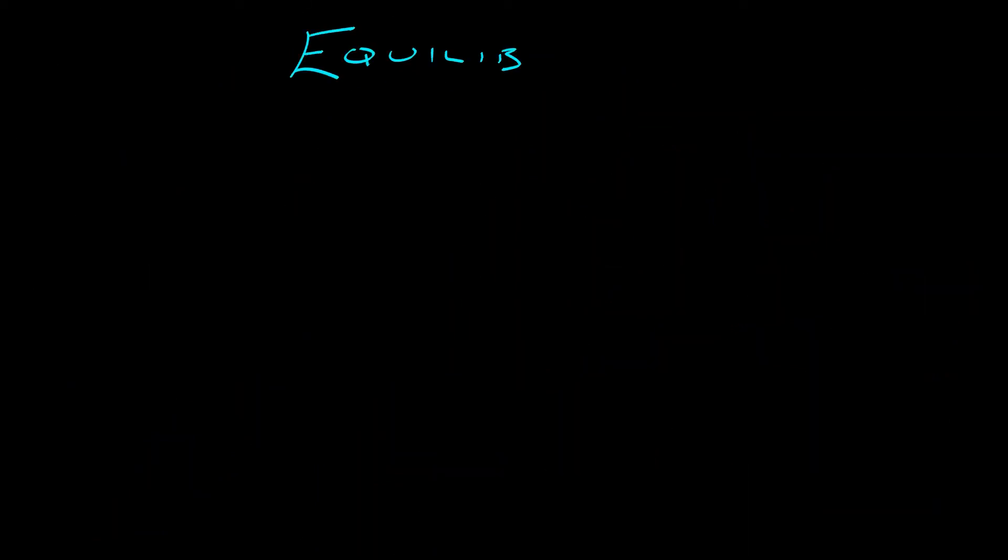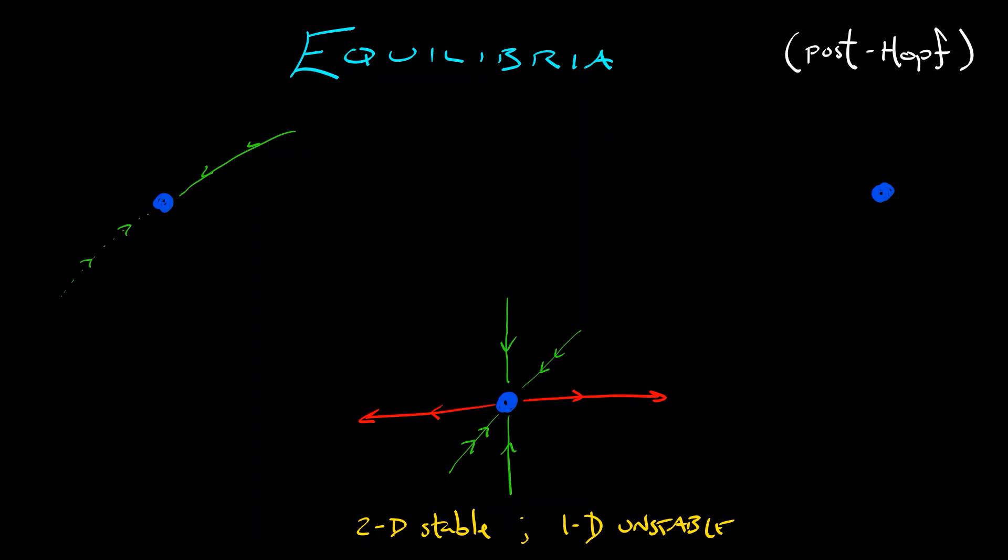Well, if we summarize what we know about the equilibria post-Hopf, ergo propter Hopf, then what do we have? At the origin, we have two stable directions and one unstable direction. We know the dimensions of our eigenspaces. That's the simple one. The ones that are more complex are this pair of equilibria after the Hopf. Let's say we'll call them on the left and on the right. And on the left, what we have is a one-dimensional stable eigenspace, a two-dimensional unstable eigenspace with spiraling.